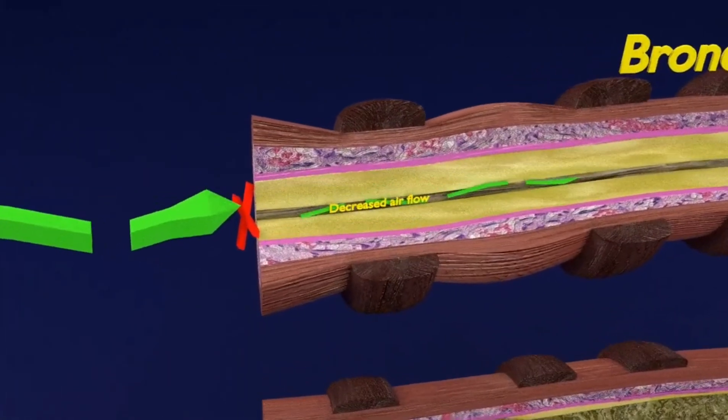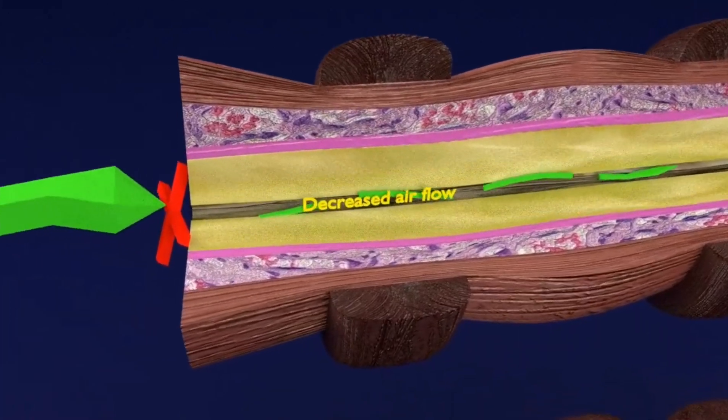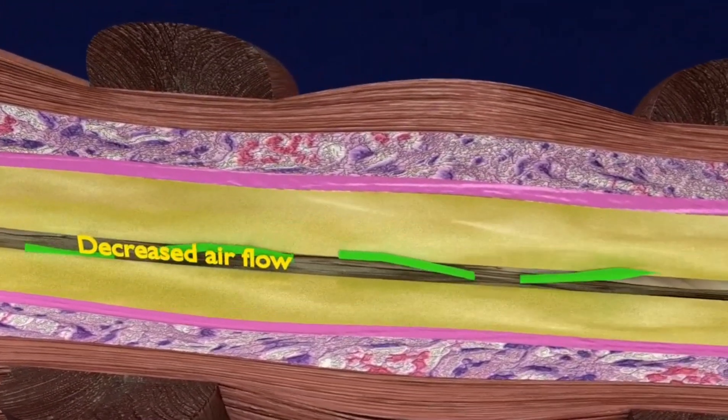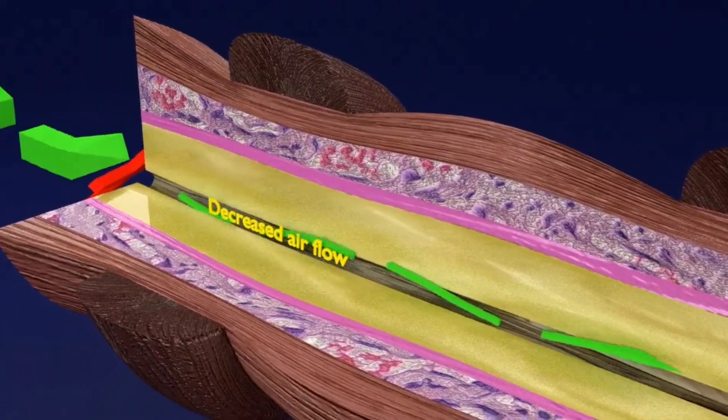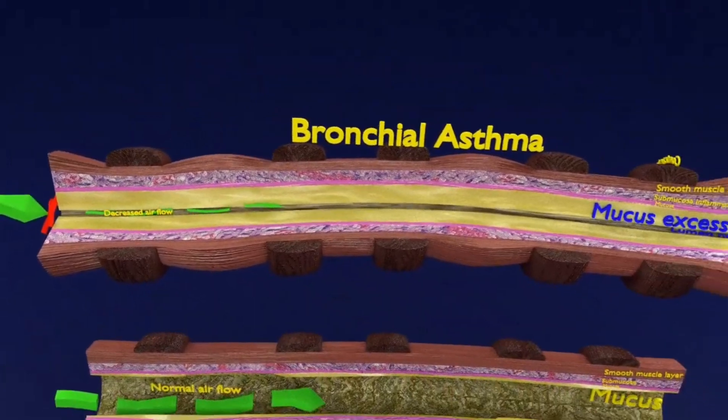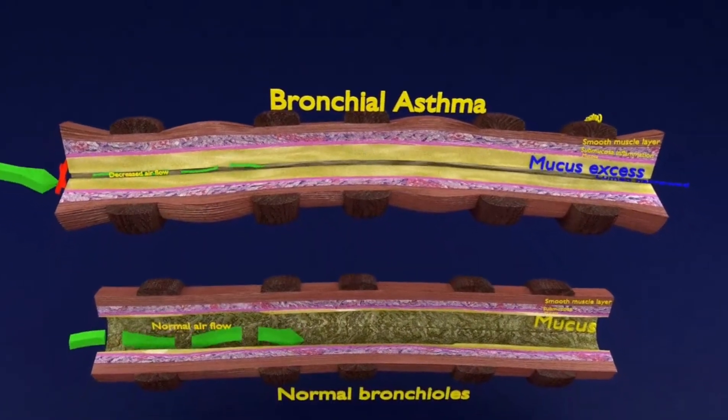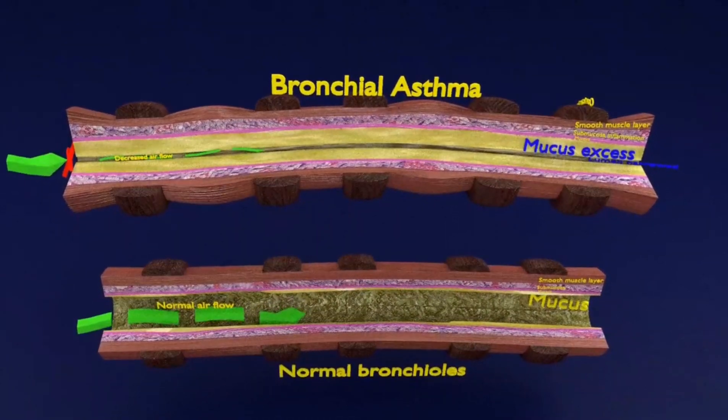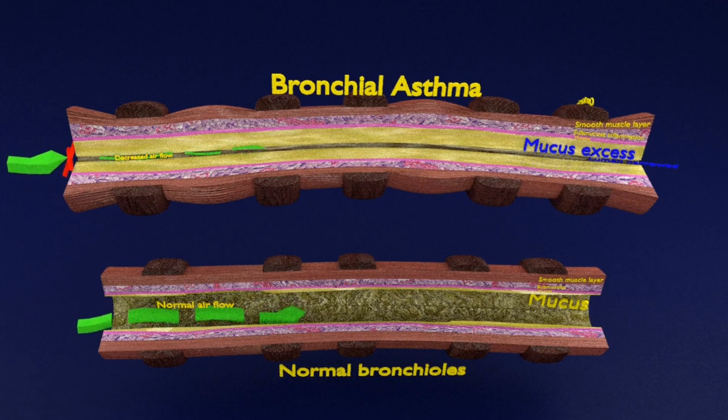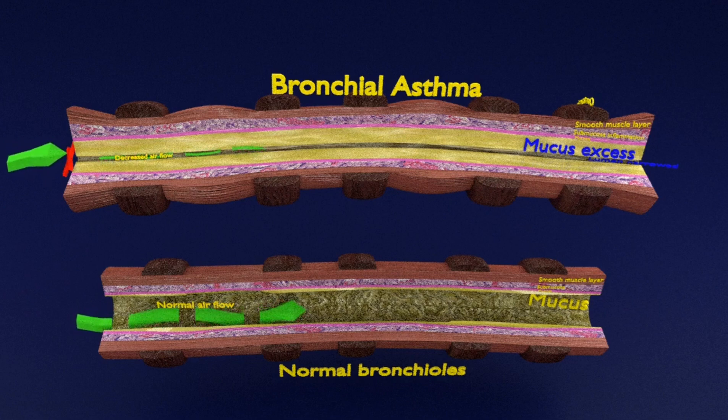Unlike other obstructive lung diseases called chronic obstructive pulmonary disease or COPD, the airway obstruction in asthma is usually reversible. However, if left untreated, the chronic inflammation from asthma can lead to irreversible obstruction due to airway remodeling.